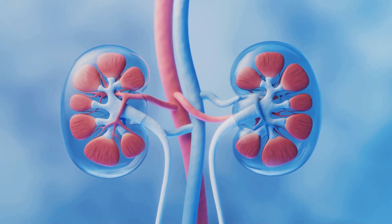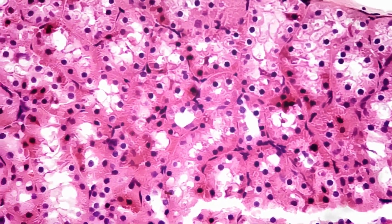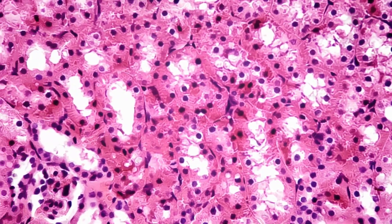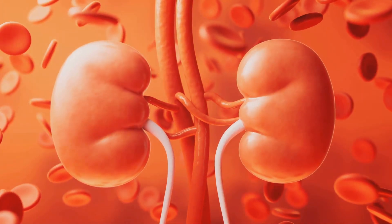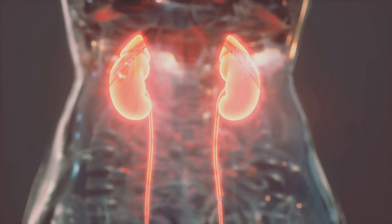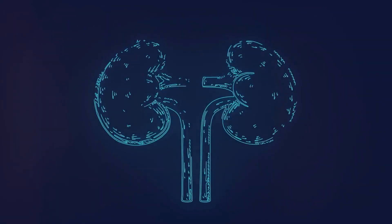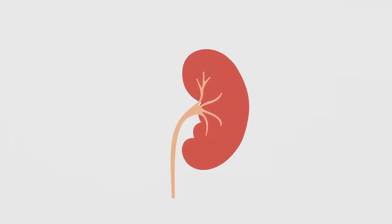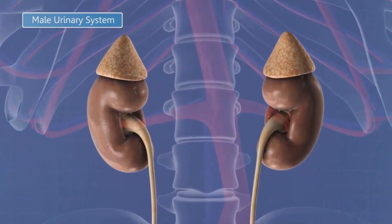The kidneys are the body's master regulators of water balance, working tirelessly to filter waste products from the blood and maintain the right amount of water and electrolytes. Think of them as sophisticated filtration systems, removing toxins and excess fluids while retaining essential substances. As blood flows through the kidneys, it passes through millions of tiny filters called nephrons — these microscopic units act like sieves, separating waste products, excess water and electrolytes from the blood. The filtered waste is excreted as urine. The kidneys are incredibly adaptable: when water levels are low, they conserve water by producing concentrated urine; when water is abundant, they produce more dilute urine to eliminate excess fluids.